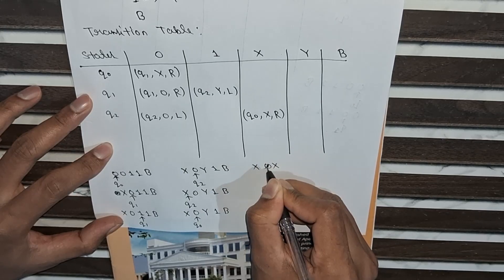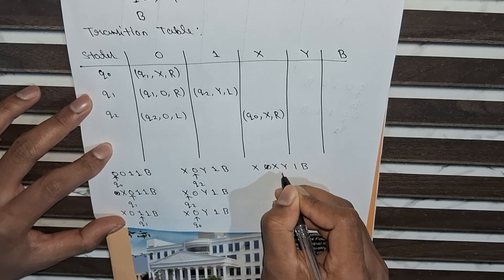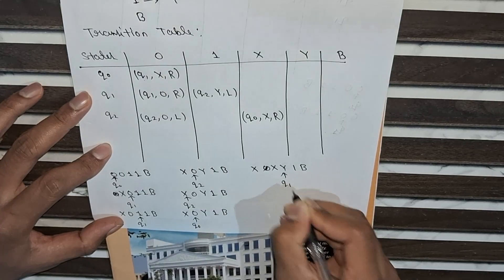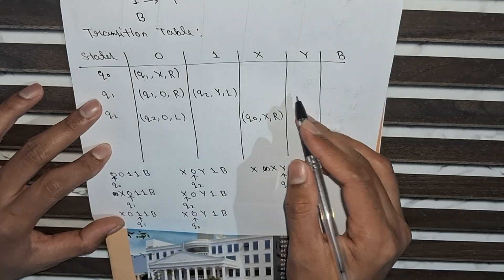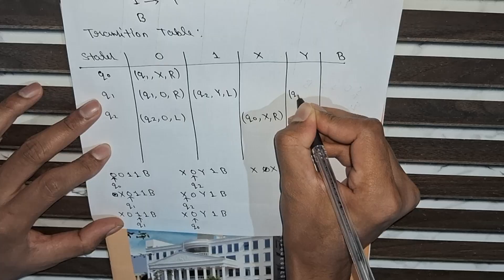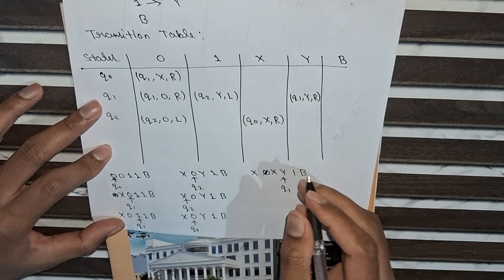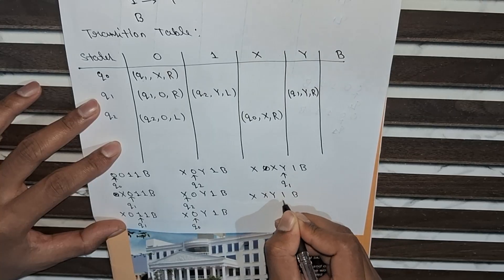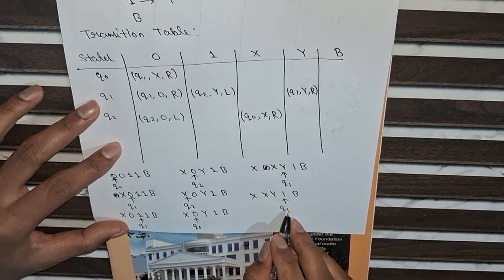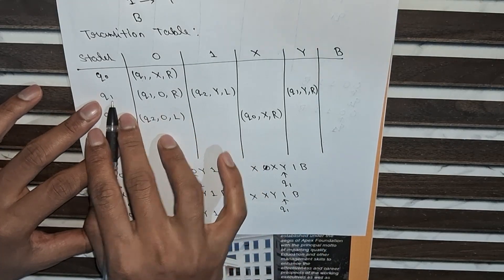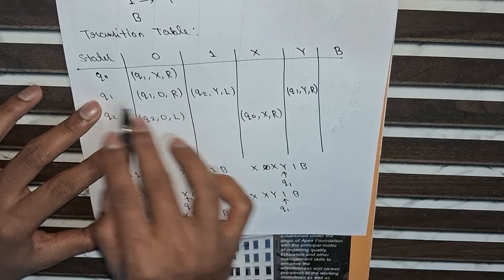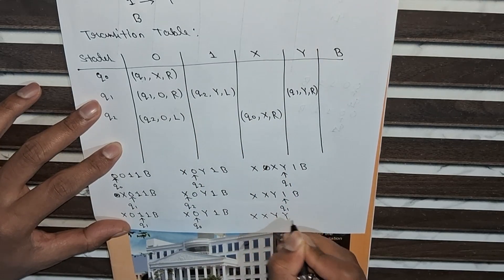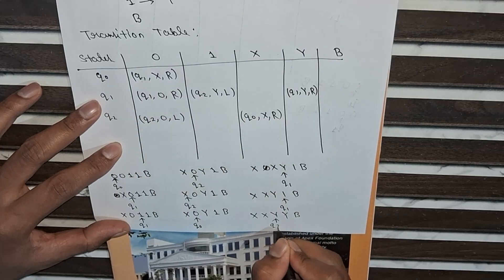Now back at q0 on 0, we change 0 to X and move right — the tape is now X X Y 1 B. The read-write head is on Y with state q1. At q1 on Y, keep state q1, keep Y, and move right to encounter the next 1. Then at q1 on 1, we already defined: change state from q1 to q2, change 1 to Y, and move left. The tape becomes X X Y Y B.